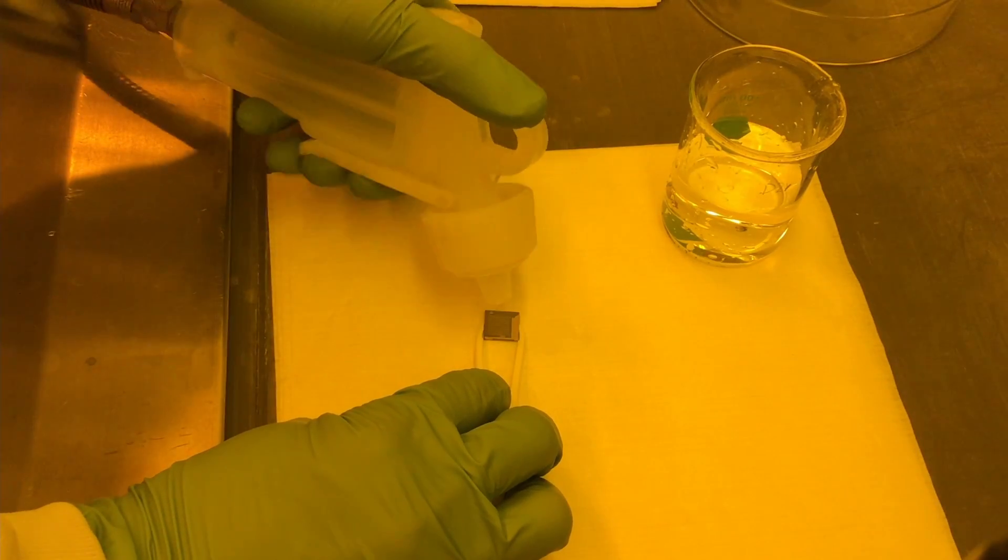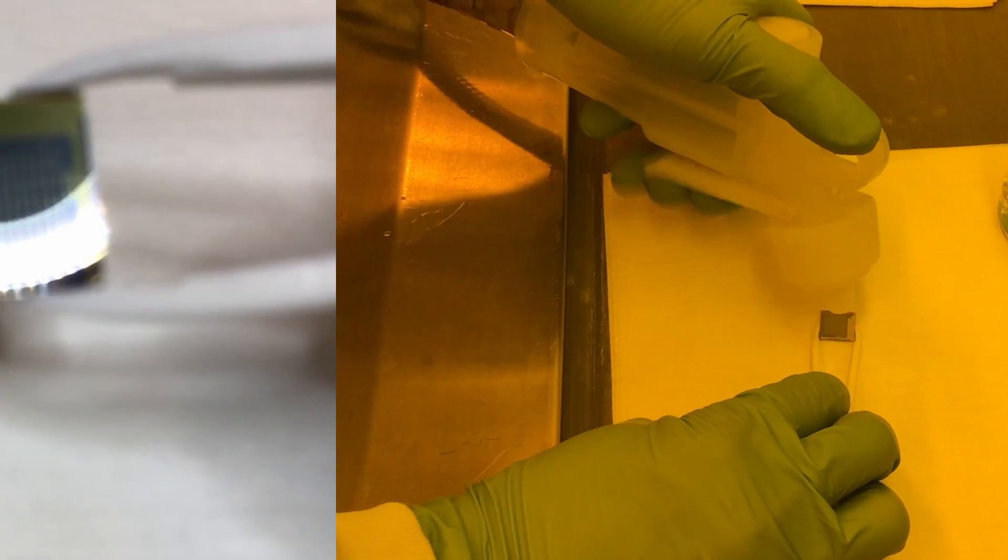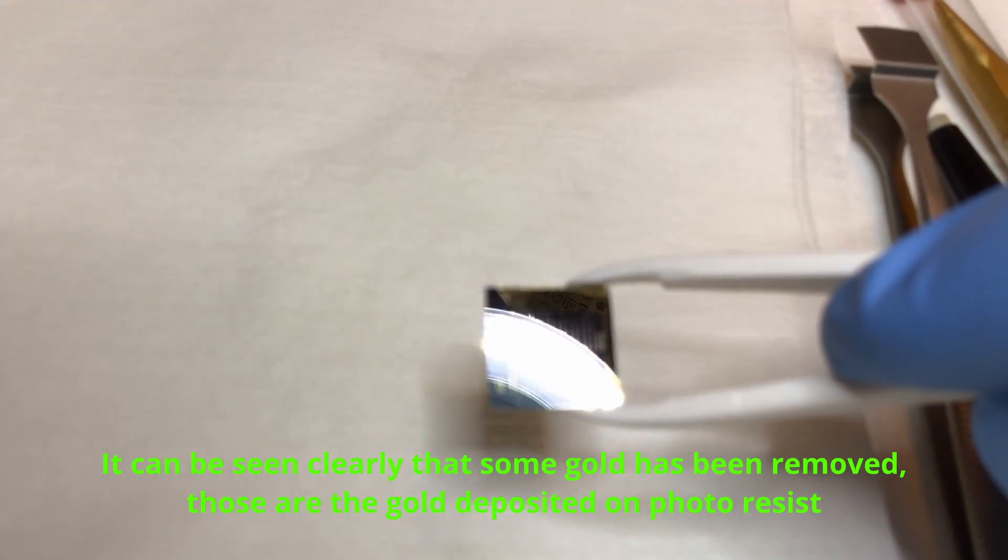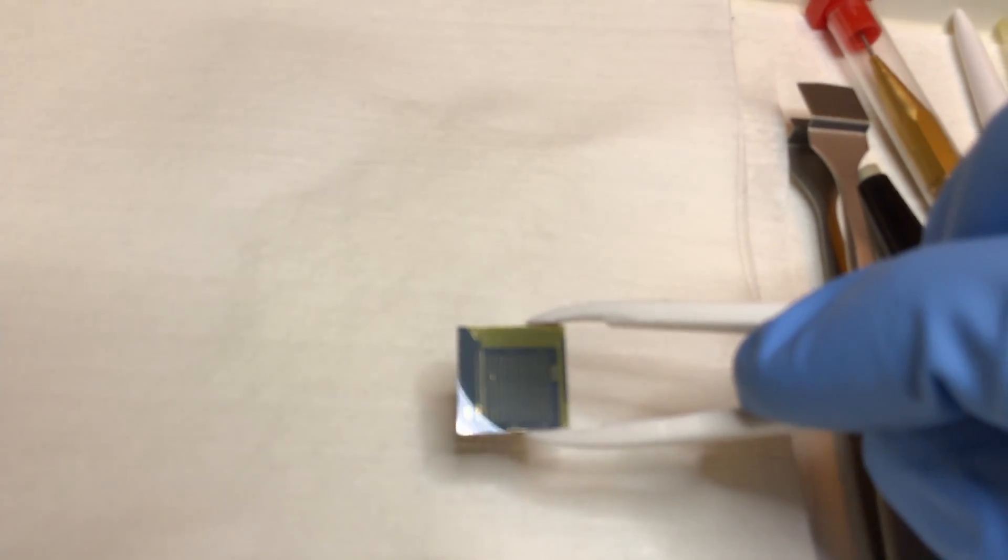Rinse the sample and dry it. Now it is very clear that the gold coated on the sample surface stays, while the gold deposited on the photoresist has been removed.